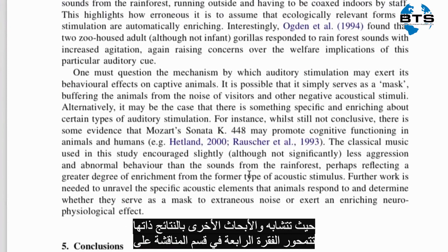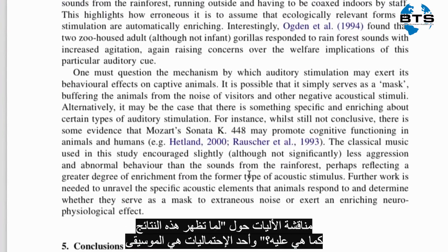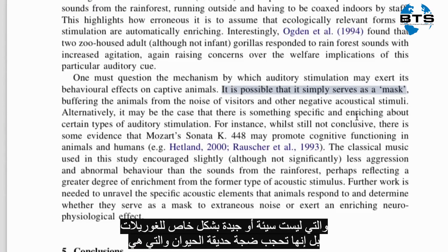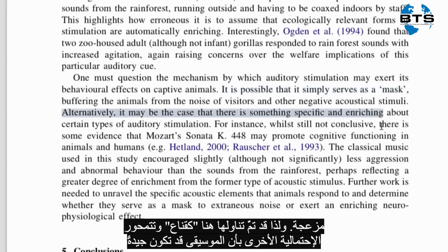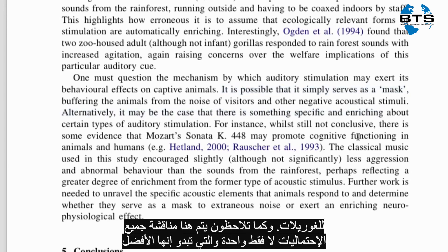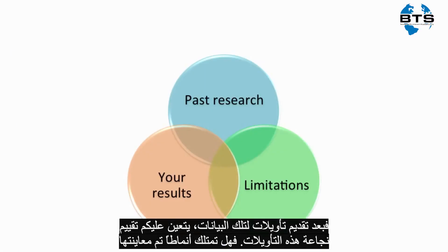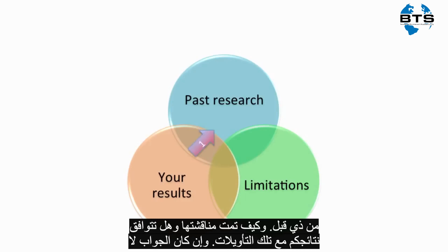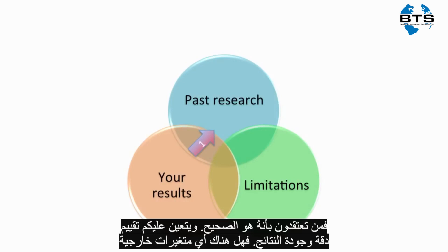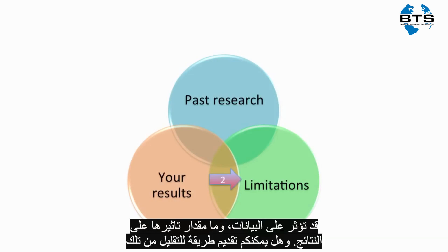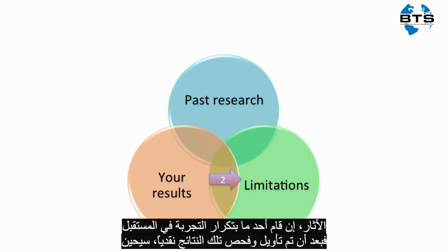The fourth paragraph discusses the mechanism behind why the results were the way they were. One possibility is that the music is not especially good or bad for gorillas — it just covers up the zoo noise, which is bad; that's the 'masking' explanation. The other possibility is that music is actually good for gorillas. Notice that they consider all possible explanations, not just the one they like best. After proposing an explanation, you need to assess its validity: has a similar pattern been observed before? How was it explained? You also need to evaluate accuracy and precision, consider extraneous variables, and propose ways to reduce their effect.